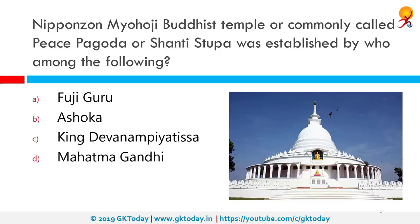The Nipponzan Myohoji Buddhist temple, commonly called Peace Pagoda or Shanti Stupa, was established by whom? The correct answer is Fujii Guruji. Fujii was greatly inspired by his meeting with Mahatma Gandhi in 1931 and decided to devote his life to promoting non-violence.